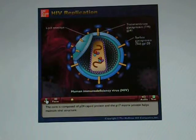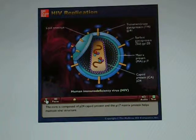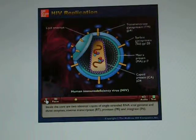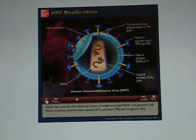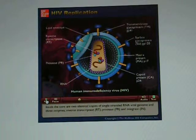The core is composed of P24 capsid protein and the P17 matrix protein helps maintain viral structure. Inside the core are two identical copies of single-stranded RNA viral genome and three enzymes: reverse transcriptase (RT), protease (PR), and integrase (IN).